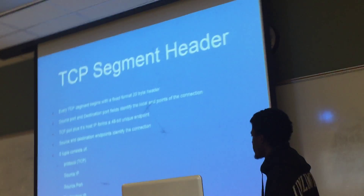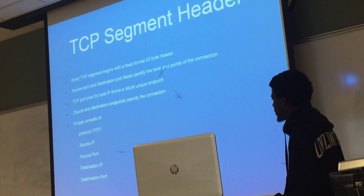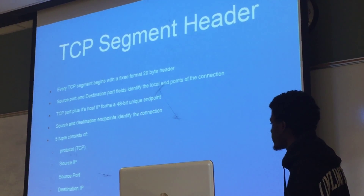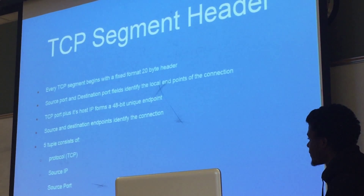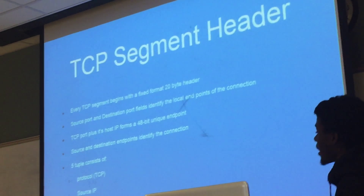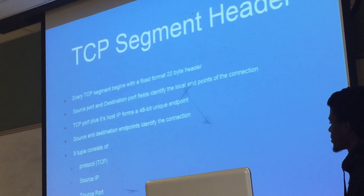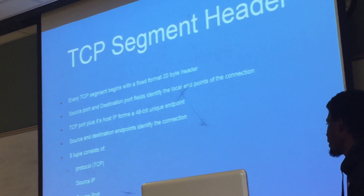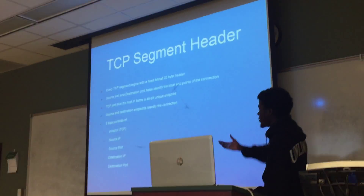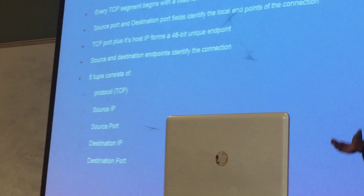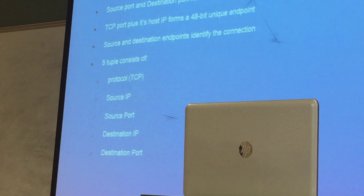Every TCP segment begins with the segment header. The source port and destination port fields identify the local endpoints of the connection with the host's IP address and the TCP port, which is a 16-bit identifier. Together those make a unique endpoint identifier, and with both endpoints you can make an identifier for the complete connection. That identifier is called the 5-tuple, consisting of: the protocol, the source IP, the source port, the destination IP, and the destination port.